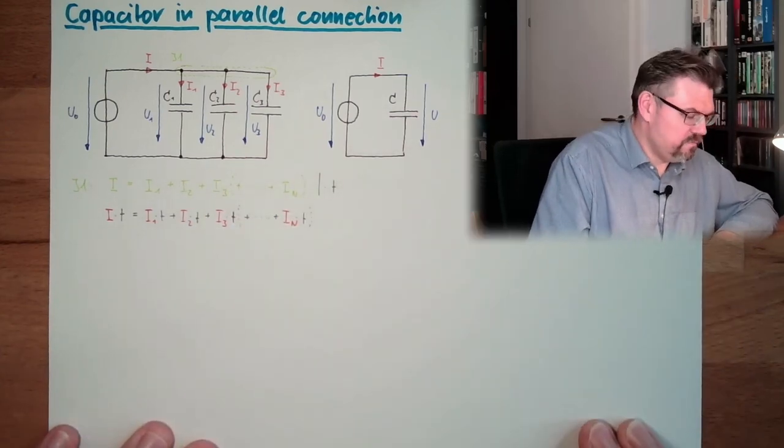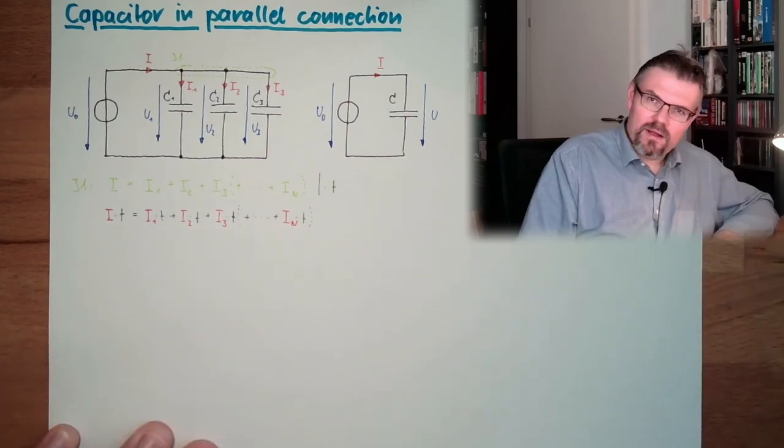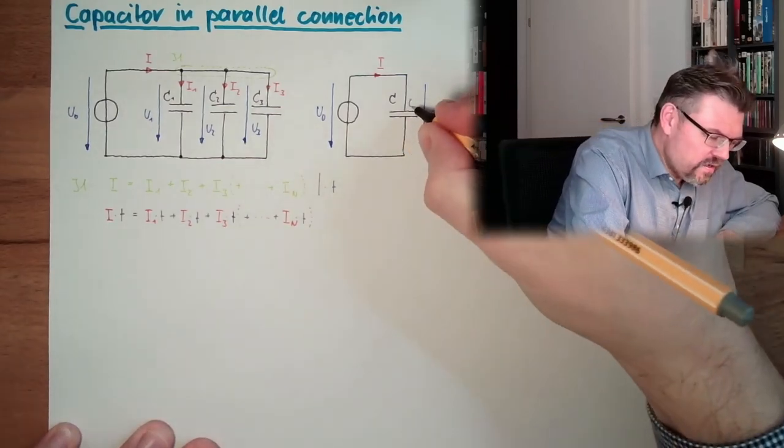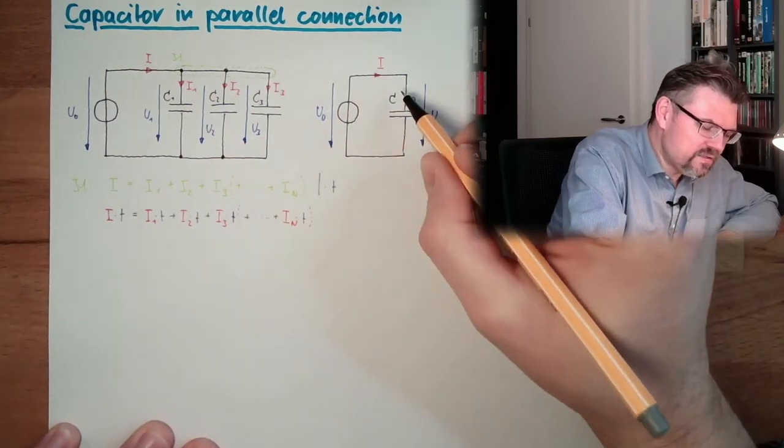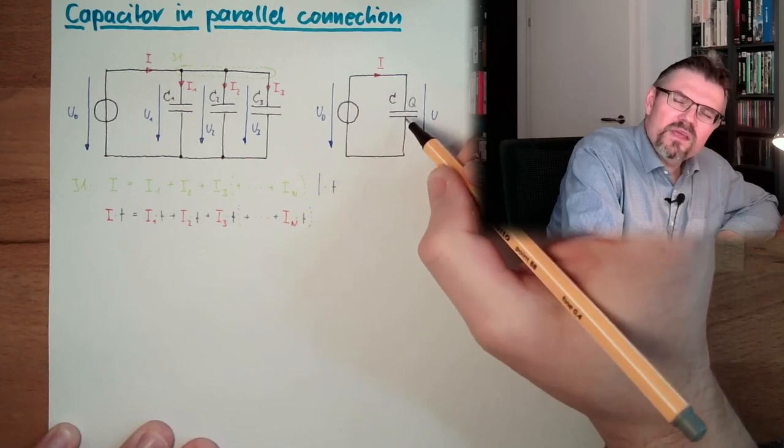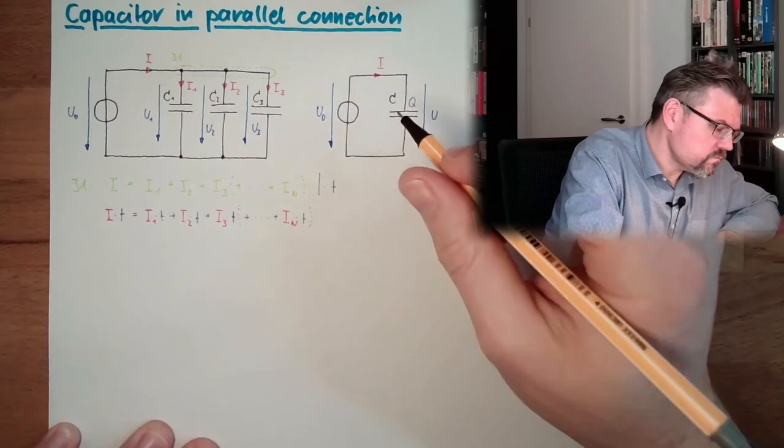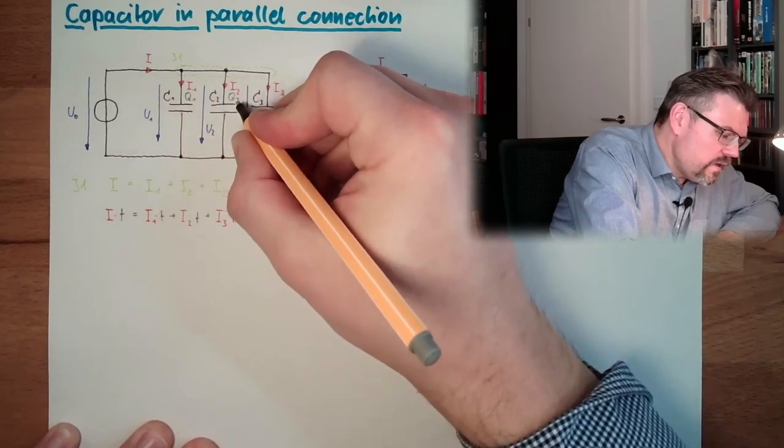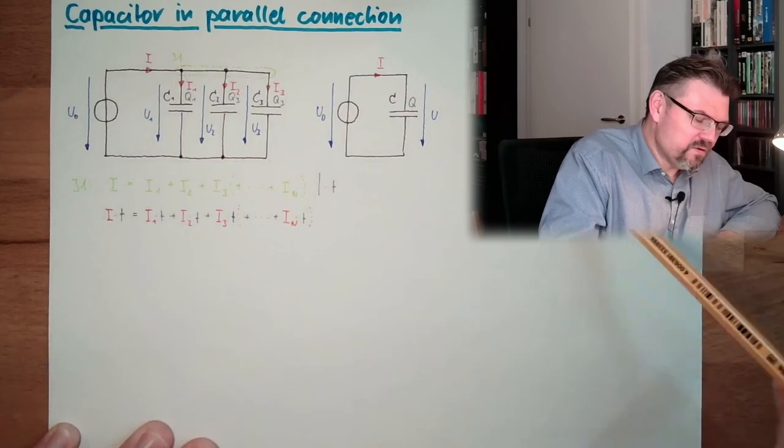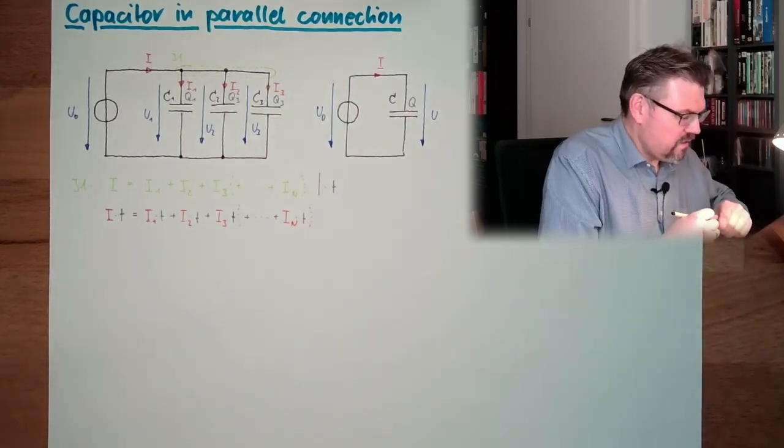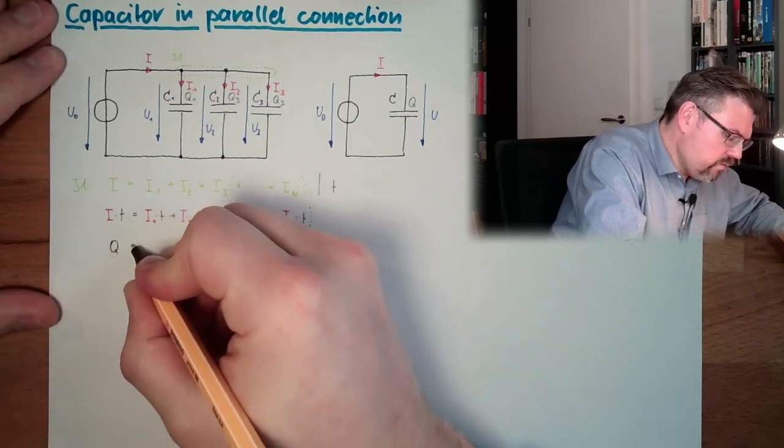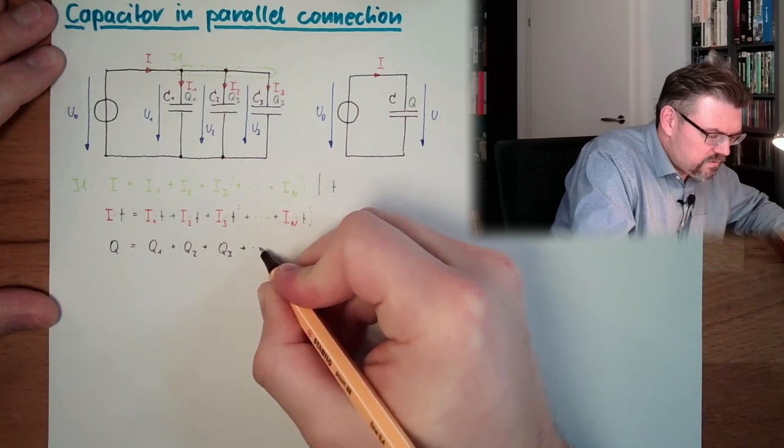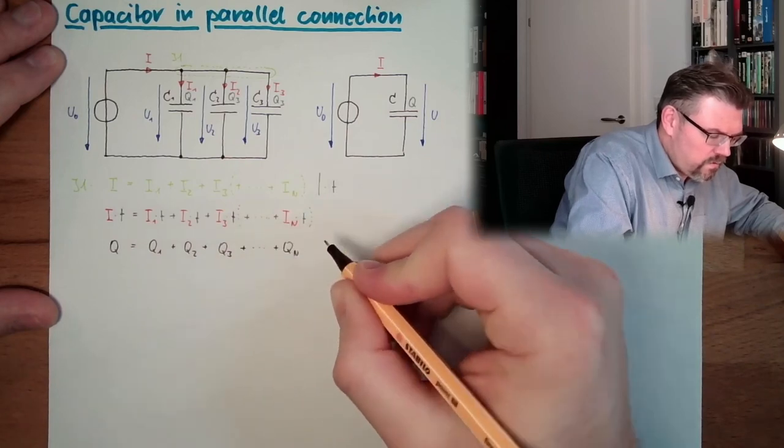Now what is I multiplied by t? I multiplied by t is the transported charge. So this is actually the charge which is in here. So we have here q. So I multiplied by t is the charge which has been added to this capacitor in the time t. If I say now t is time. And I1 multiplied by t by the same amount of time, it's q1, it's q2, it's q3, it's qn. So actually what is written here is that we have here qq equals q1 plus q2 plus q3 plus qn. Extrapolation again.